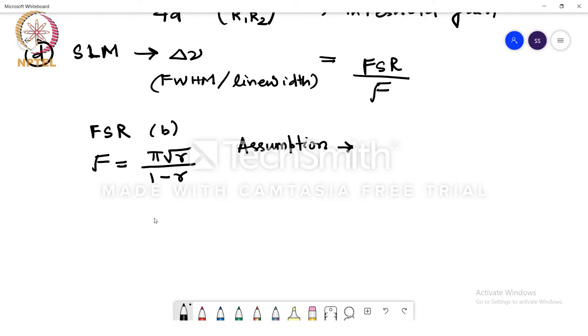The assumption is that the line width is going to be a function of only the cavity parameters and it is independent of the gain medium. Independent of the gain medium. In that case r will be equal to square root of r1, r2.